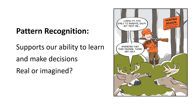In evolutionary terms, patterns are used to tell us something about our current environment in order to make predictions for the future — important for our learning process and the ability to make decisions. Sometimes the patterns are real, and other times they're just a result of chance. Still, identifying patterns, even if they're not real, is generally better than ignoring legitimate ones. Historically, the better choice has been to go with a false positive rather than a false negative. That is why our brains have developed into pattern-detecting machines.